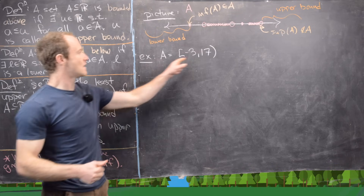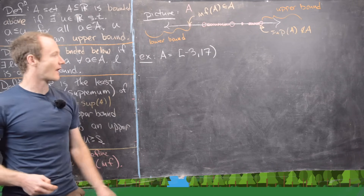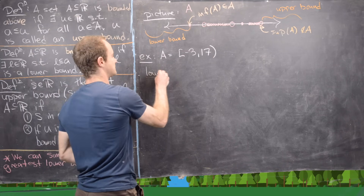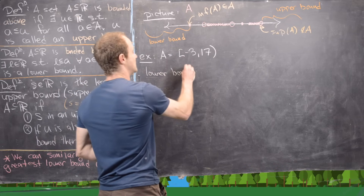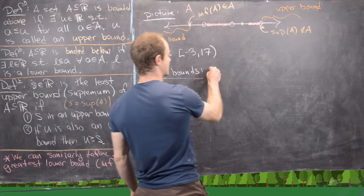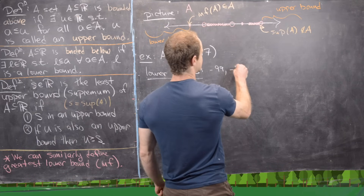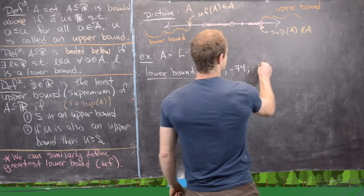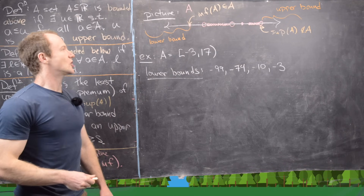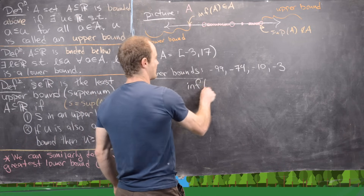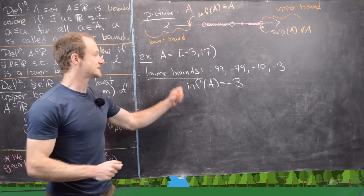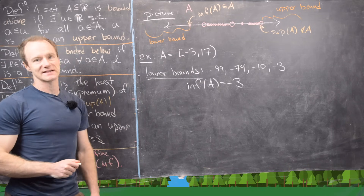Now let's look at an example with the interval from negative 3 to 17. We can list lower bounds — numbers smaller than everything in that set — which will be everything less than or equal to negative 3: like negative 99, negative 74, negative 10, negative 3. But there is a single greatest lower bound, the infimum, which is obviously equal to negative 3, because every other lower bound is less than this one.